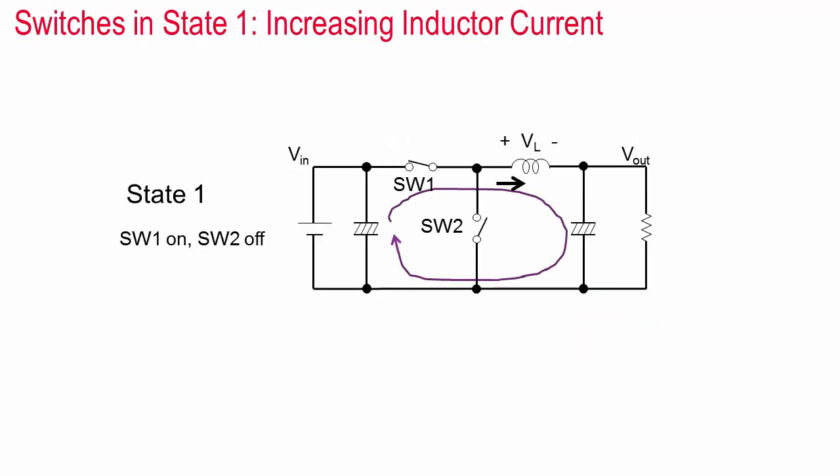When switch one is closed and switch two is open, current flows as shown. There is a voltage across the inductor V in minus V out equals L di dt. Since V out is lower than V in, di dt is positive in the direction of the arrow and the output capacitor charges up which causes the output voltage to increase.